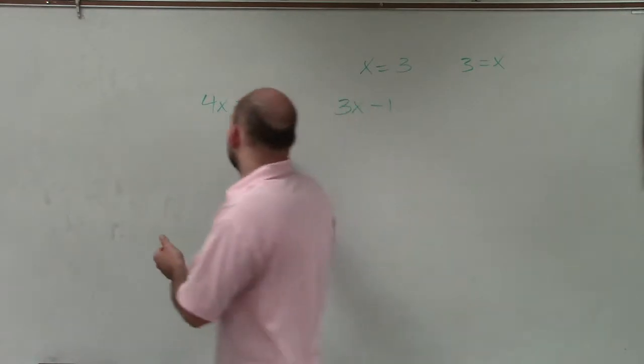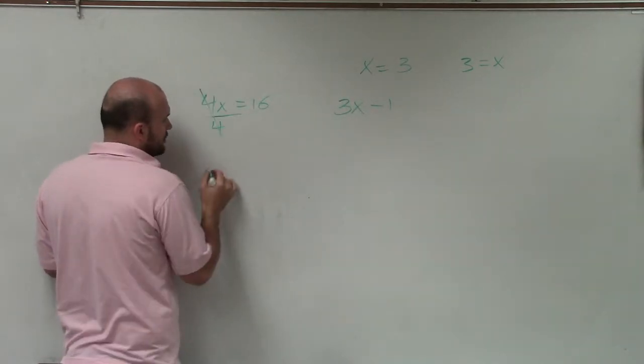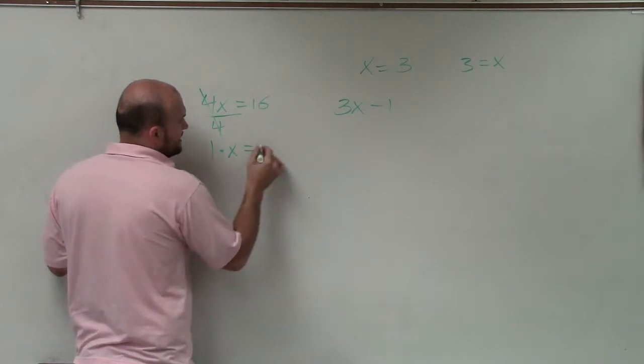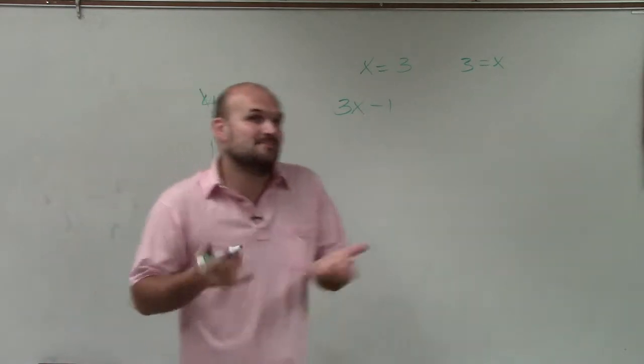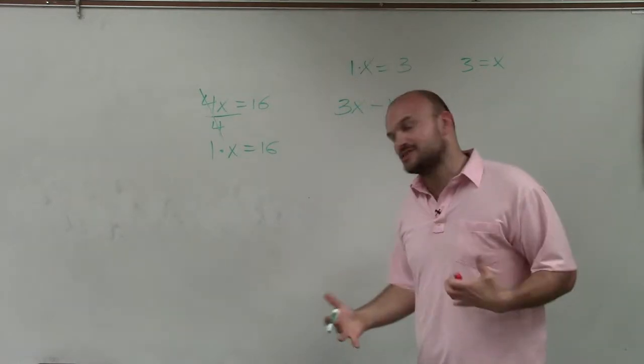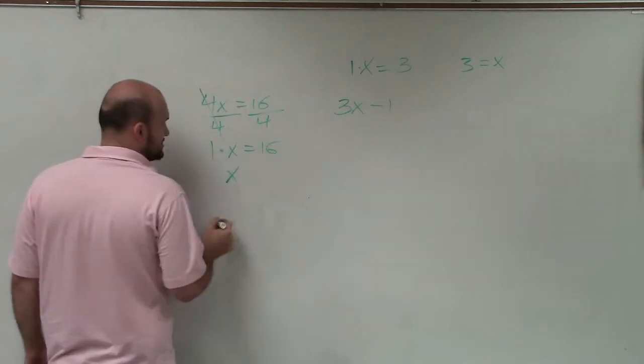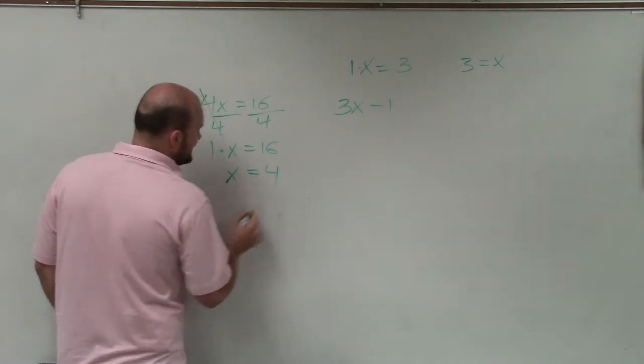I want to isolate the variable. Because when I divide by 4, what happens is 4 divided by 4 goes to 1 times x equals 16. And you could say, well, there's still a 1 times x. But there's always a 1 times x. Because 1 times x is just going to equal x. So therefore, I can write it now, make sure you divide on both sides, as just x equals 4.